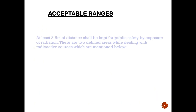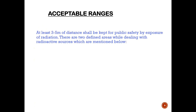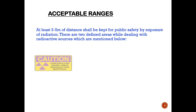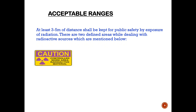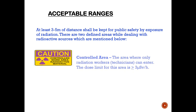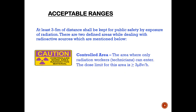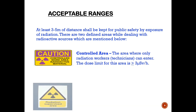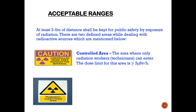For public safety, a distance of three to five meters shall be kept to avoid radiation. There are two types of areas. Controlled area: the area where only radiation workers can enter, and the dose limit for this area is greater than three micro sievert per hour. Supervised area: the area where radiation workers and general public may enter, and the dose limit for this area should be less than three micro sievert per hour.